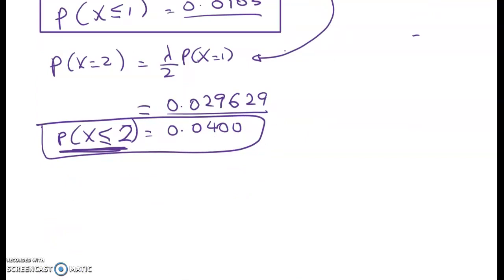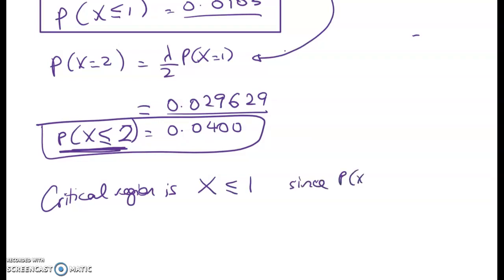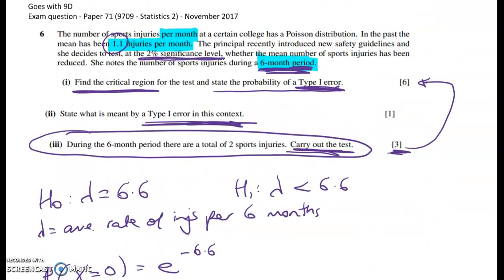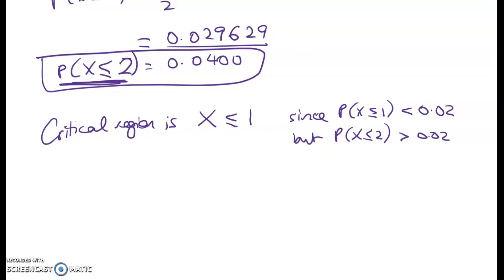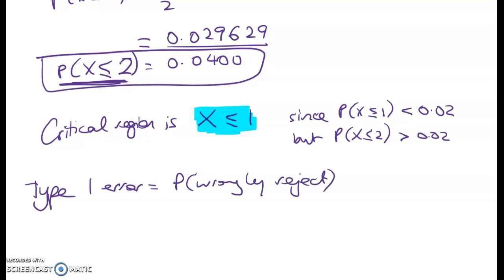The critical (rejection) region is X ≤ 1 — one or fewer accidents in six months — because P(X ≤ 1) = 0.0103, which is less than the 2% significance level, but P(X ≤ 2) = 0.0400, which exceeds 0.02. A type 1 error is where you wrongly reject the null hypothesis, and that happens if X ≤ 1. So the probability of a type 1 error is 0.0103.